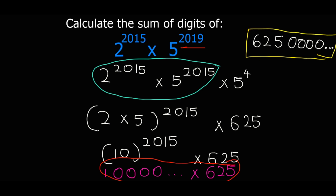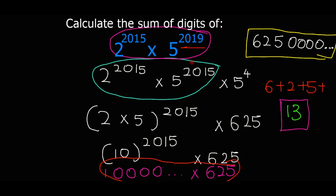Now to find the sum of digits, this is going to be 6 plus 2 plus 5 plus zeros. But when we add zeros it has no effect. So our answer is 6 plus 2 plus 5, which equals 13. This is the answer: the sum of digits of 2 to the exponent 2015 times 5 to the exponent 2019 is 13. I hope you understand. Thank you.